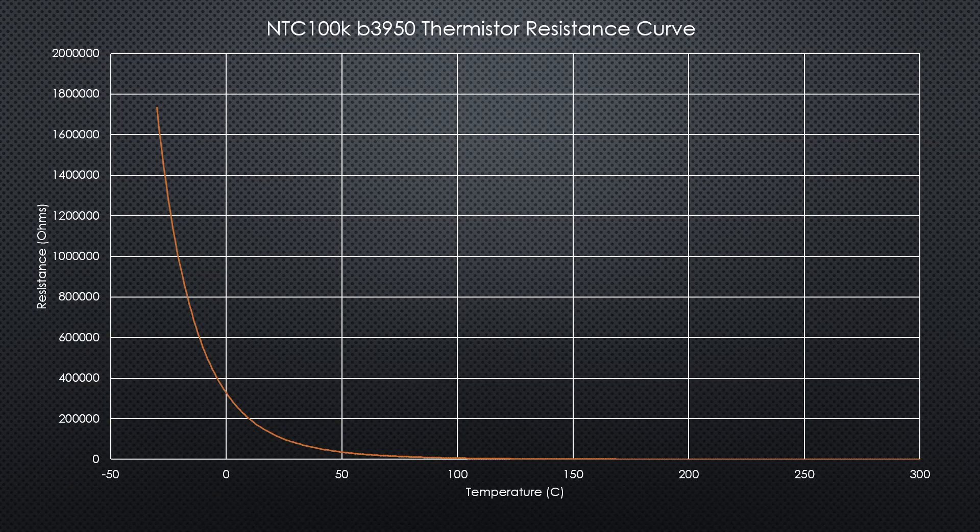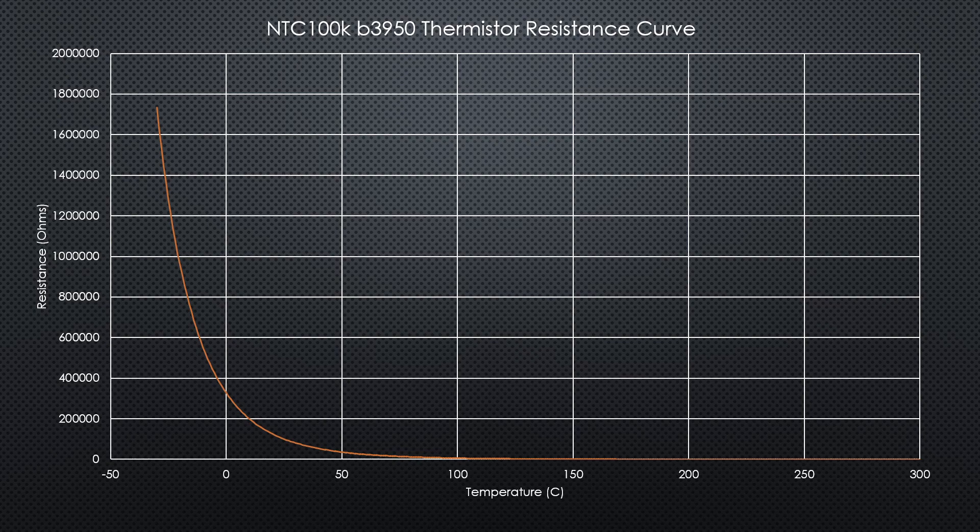However, obviously a thermistor doesn't output temperature, it outputs something else, resistance. So it is essentially exactly what it sounds like. If you mix temperature and resistor together, you get thermistor. So it varies in resistance as the temperature changes. Here is a resistance versus temperature curve for a common 3D printing thermistor. This one is generally found in heated beds.